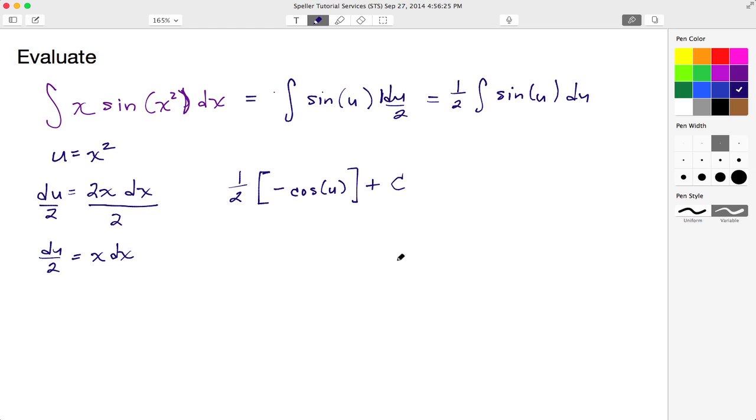Let me change everything back in terms of x. So here I have 1 half times negative cosine, well u is the same thing as x squared again, plus some constant C. And let's get rid of some of these parentheses here. So this is really negative cosine x squared over 2 plus some constant C.